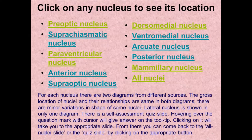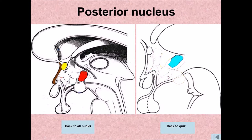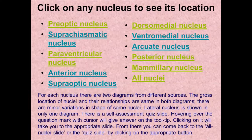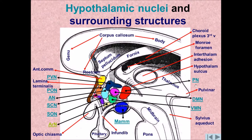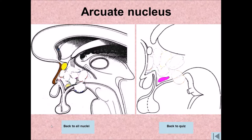Then he wants to see, for example, the posterior nucleus, and it takes him into the posterior nucleus. Now let's say he wants to see all the nuclei together. He views them and tries to figure out what 'ARN' is. He can't figure it out, so he clicks on it and it tells him that this is the arcuate nucleus.